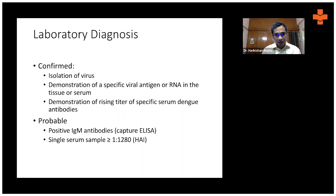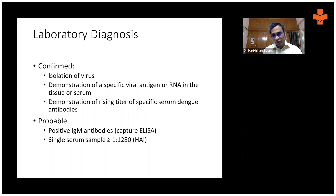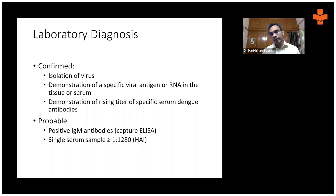So how do we confirm the diagnosis? Isolating the virus is not easy; it's only done for research purposes. What we practically do is in the first five to six days of illness, we can demonstrate specific viral antigen or the RNA of the virus. We can do a polymerase chain reaction — that is dengue PCR — or we can demonstrate specific viral antigen. What is commercially and easily available is something called the dengue NS1 antigen test, used in the first five to six days of illness.